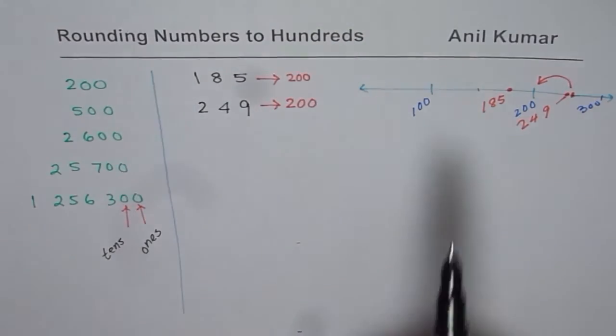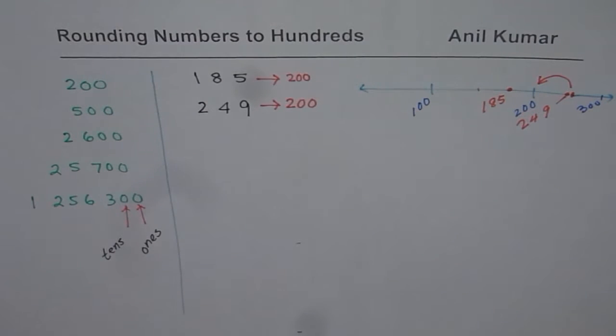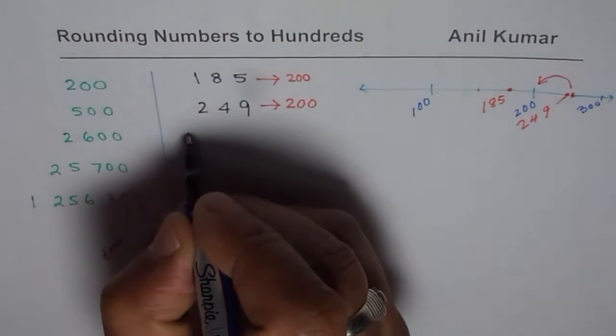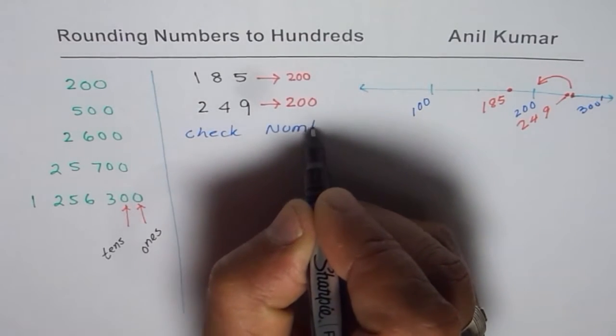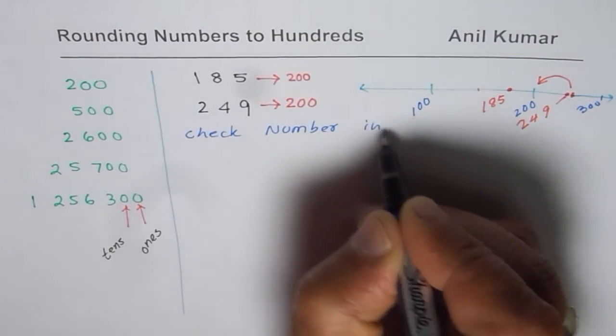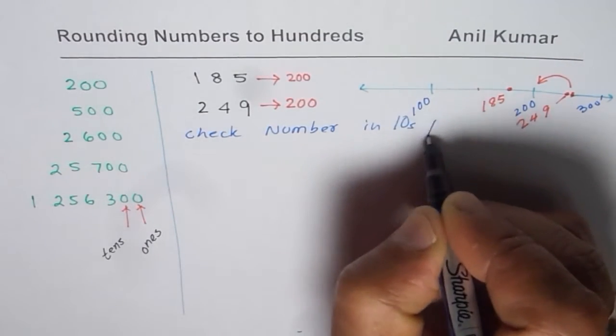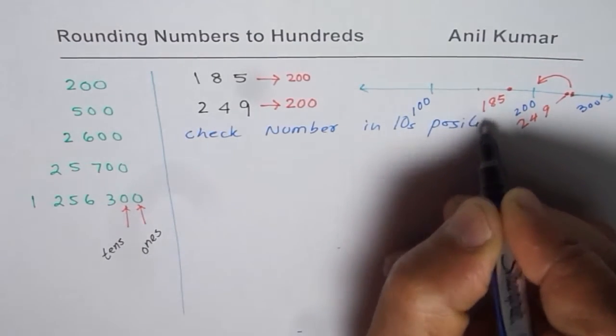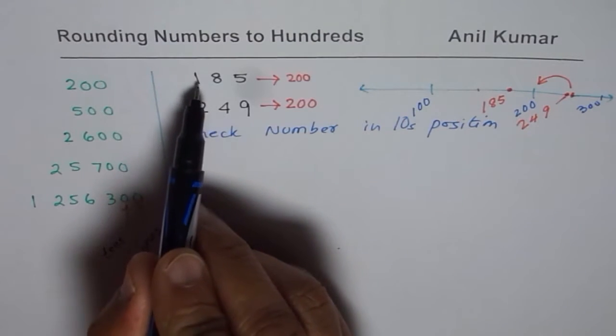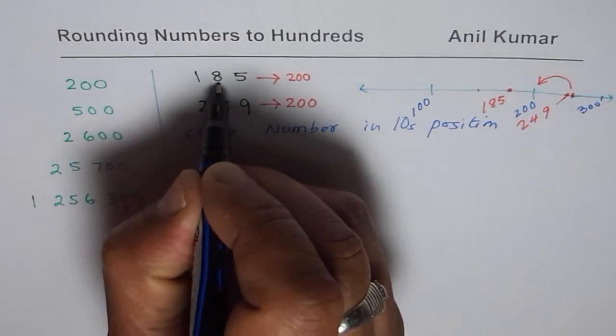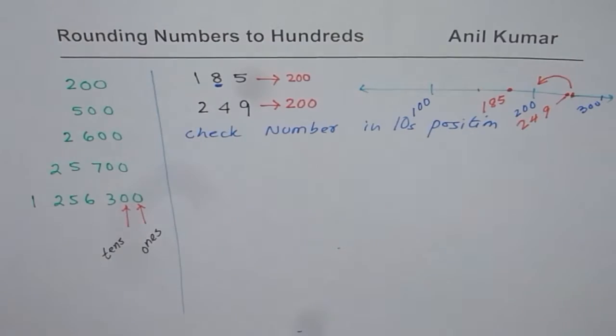So that is what you saw in the number line. But what you can also check is the numbers in tens position. So if you check number in tens position, you will know exactly how to round. Now, in our case, if I take 185,